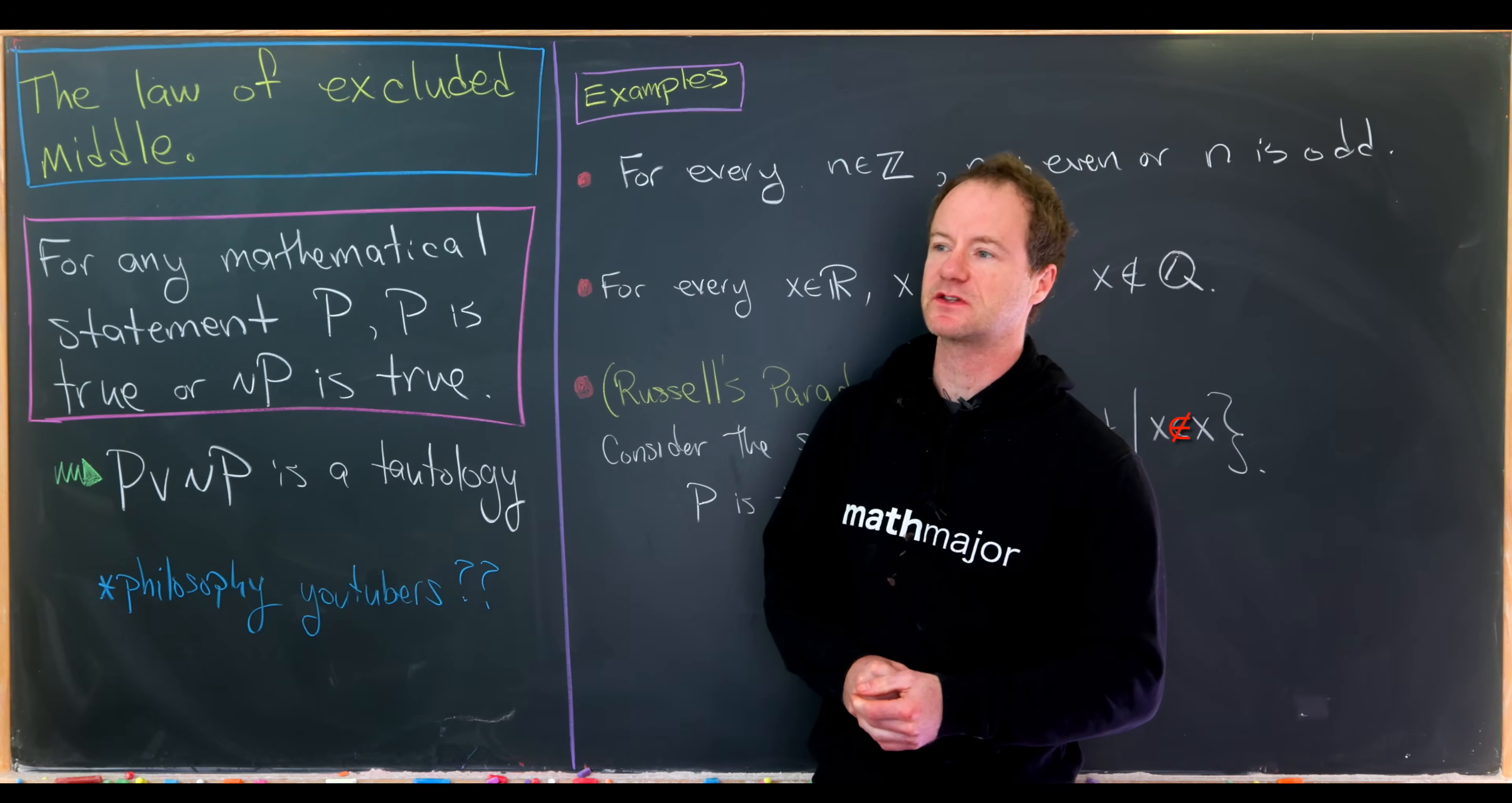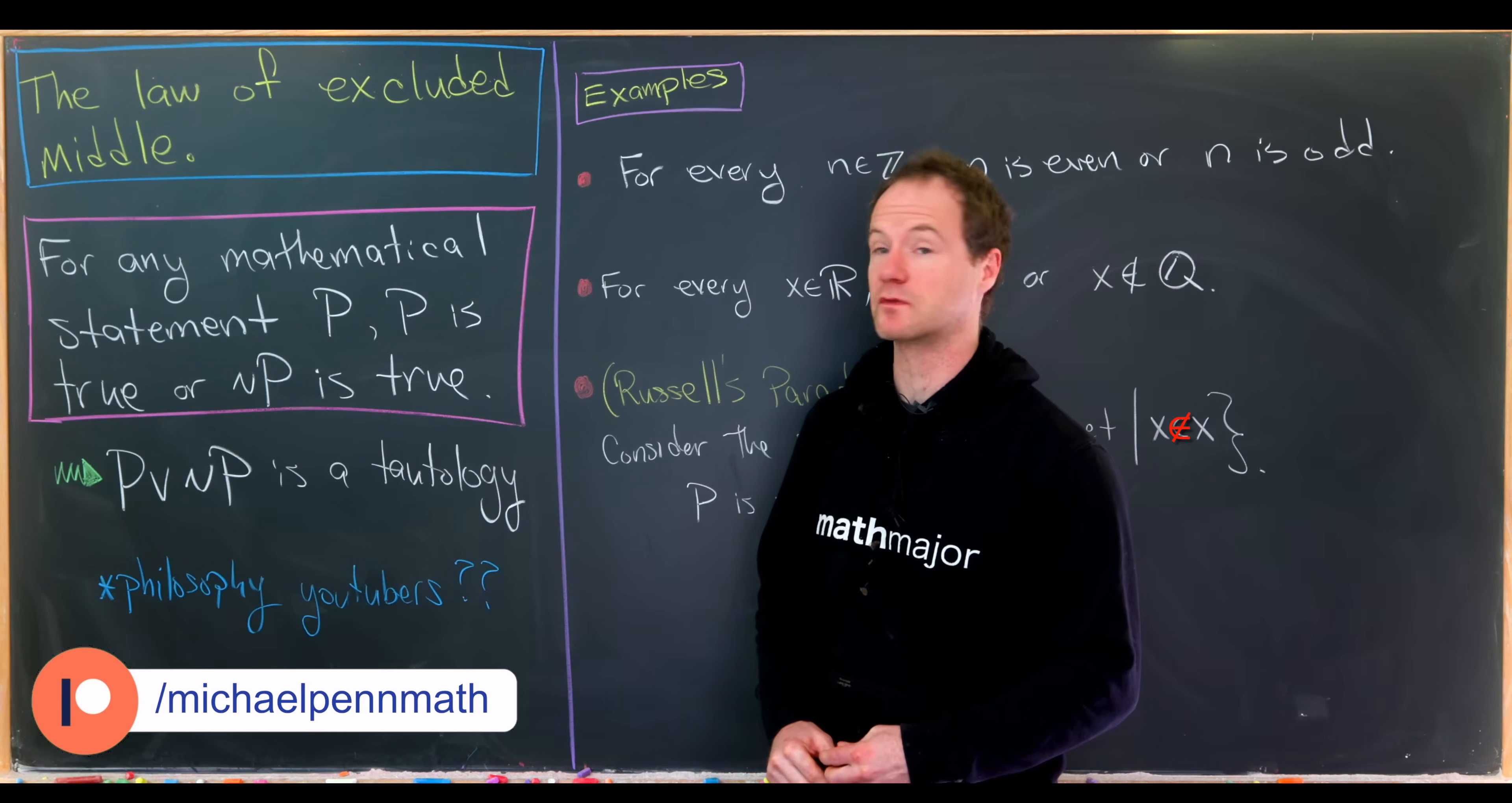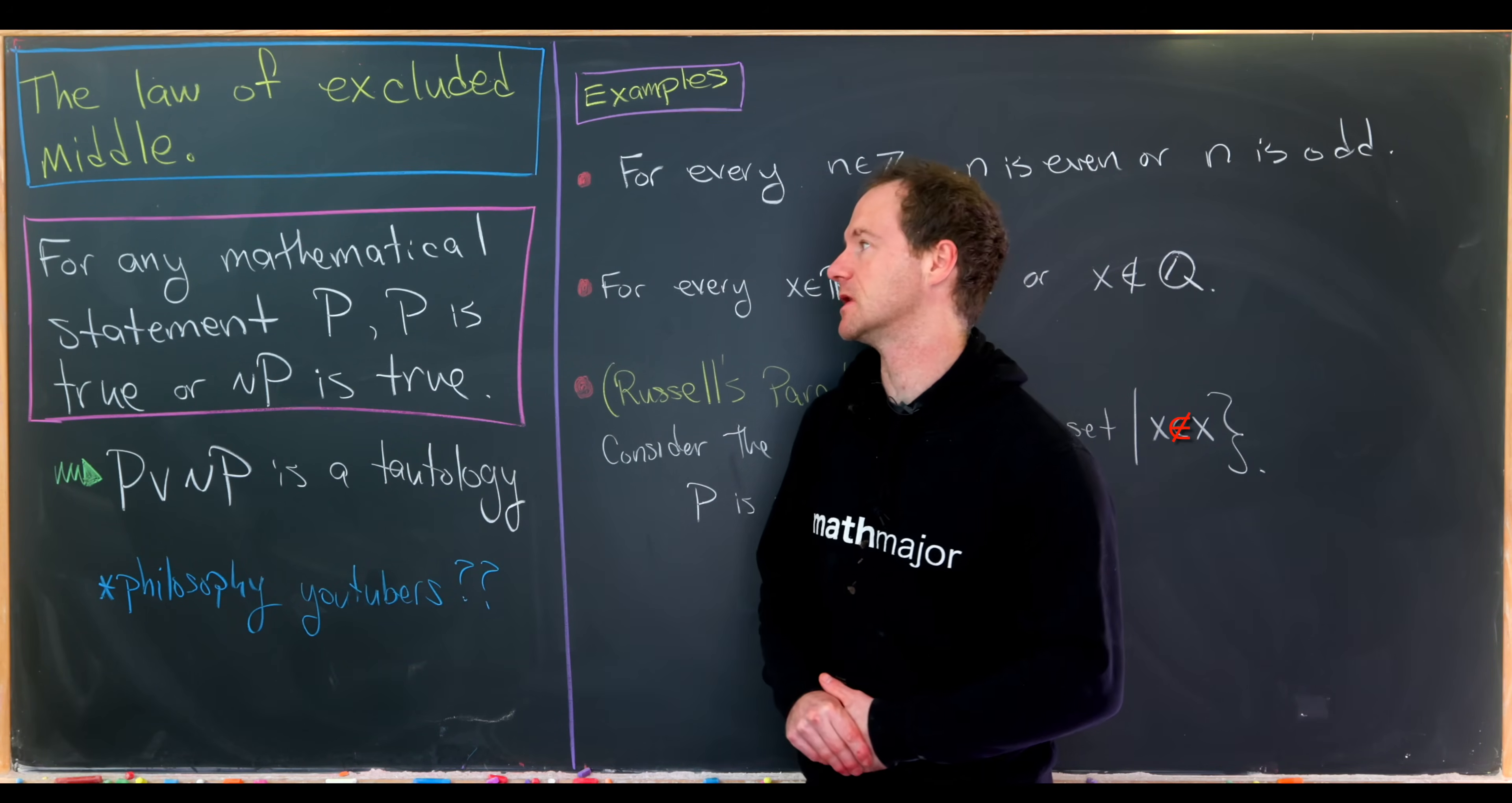Today we're very briefly going to talk about a logical idea known as the law of excluded middle. We'll look at a couple of examples of it for the purposes of looking at a really famous mathematical result. But that being said, we're not going to go very deeply into the logic. I'm introducing it just so that we know what's going on a little bit below the surface.